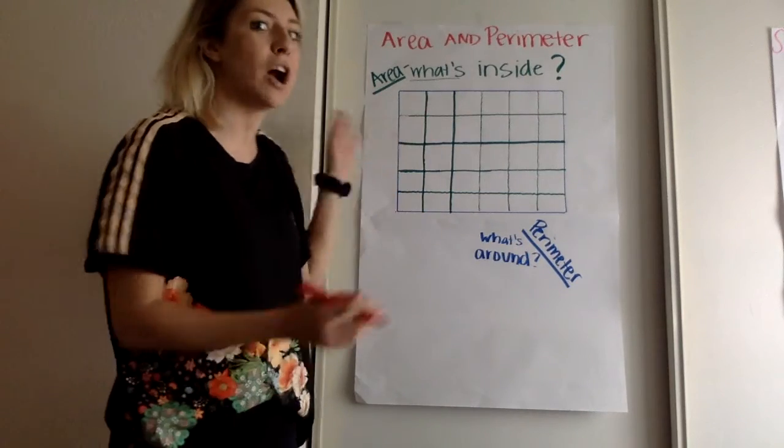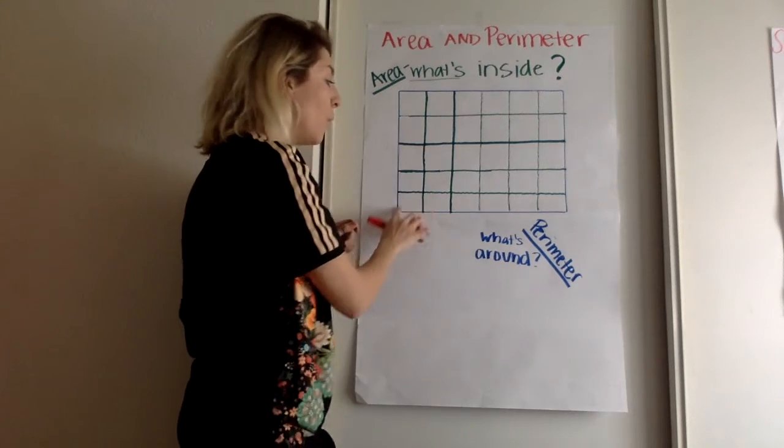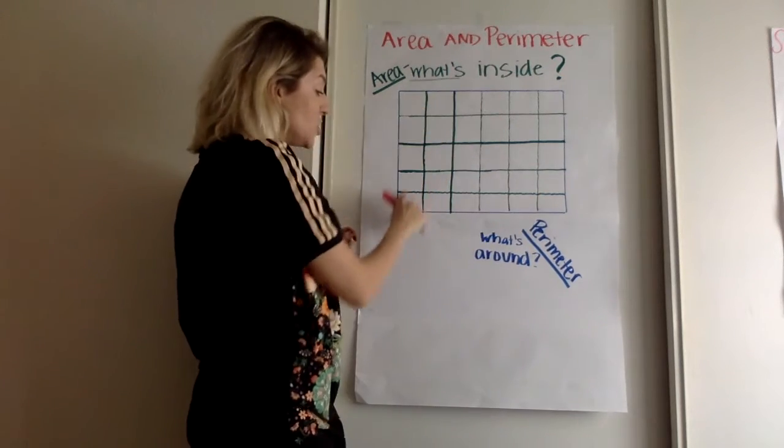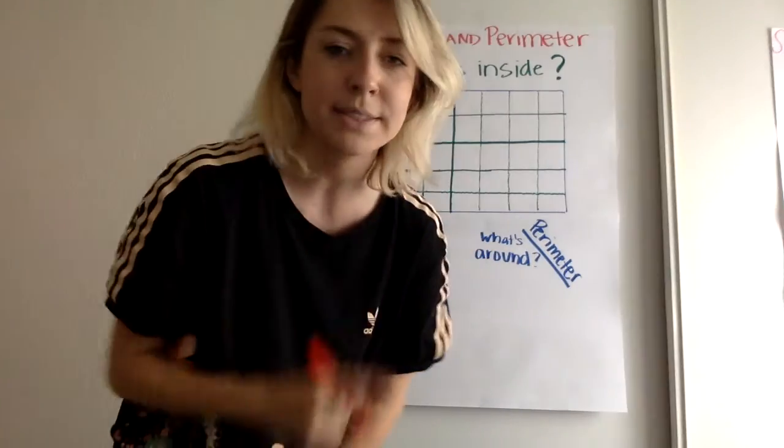So this is our math unit continuing on quadrilaterals. This giant blue shape has four sides, and they're all parallel. So that means it's a parallelogram.